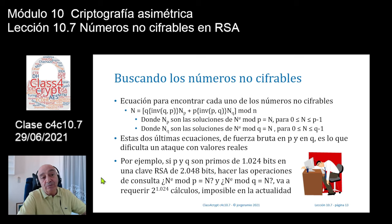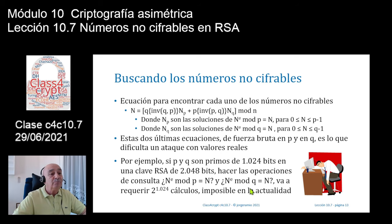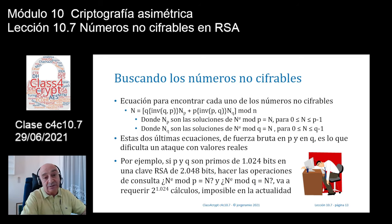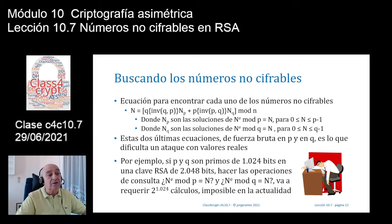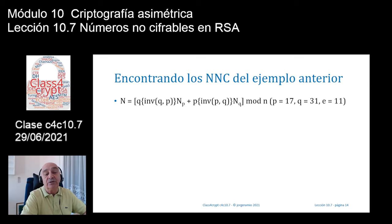Como veis, si P y Q son primos de 1024 bits para una clave de 2048 bits, hacer esas operaciones de consulta —n elevado a e módulo p igual a n para n = 0, 1, 2, 3, 4, hasta P-1, y lo mismo con Q— es lógicamente imposible porque P y Q son números primos de magnitud 1024 bits y el espacio será 2 elevado a 1024, una imposibilidad con el cómputo actual.